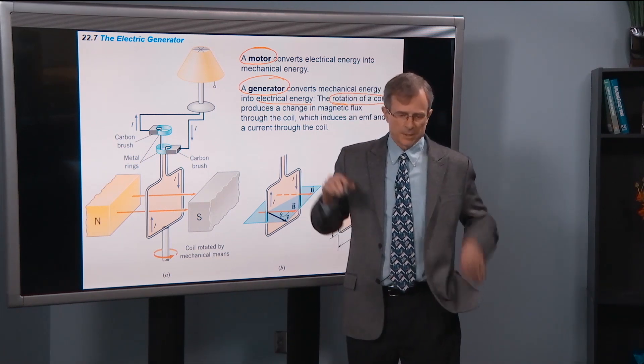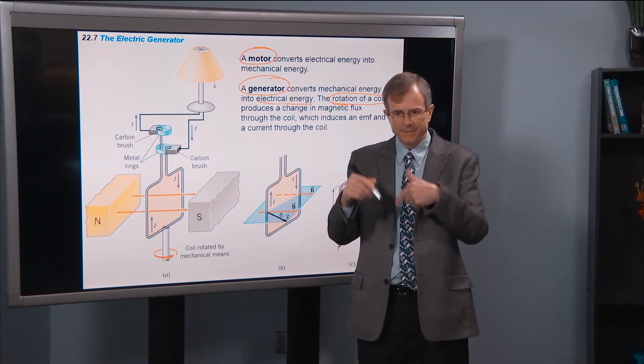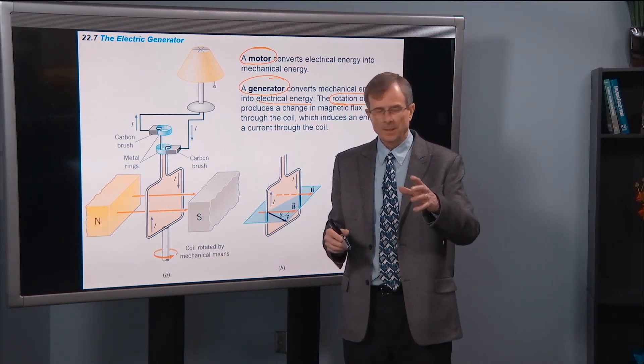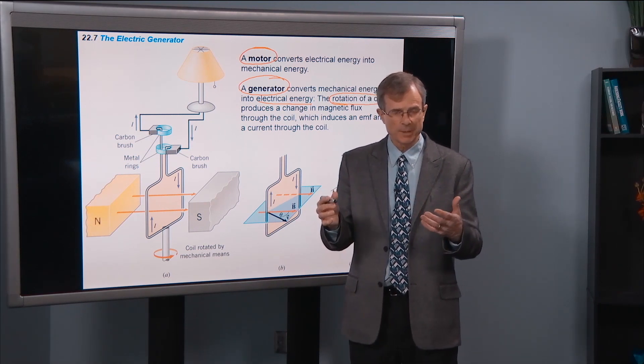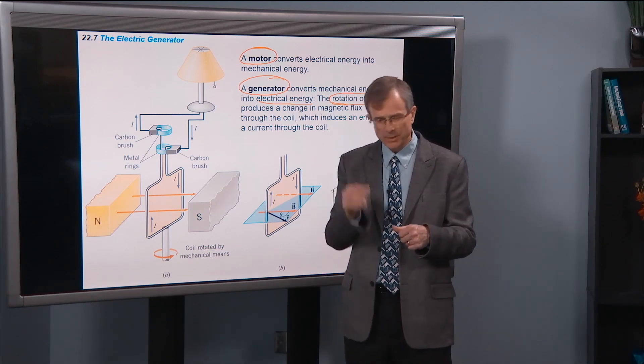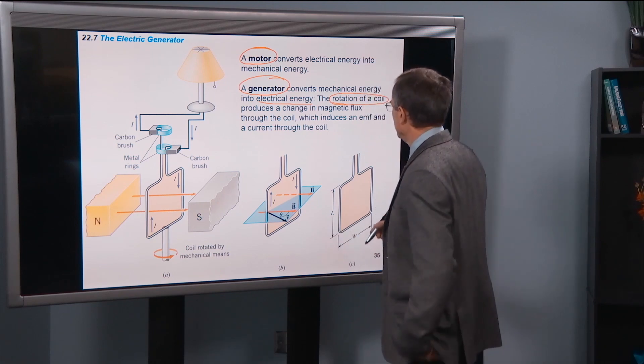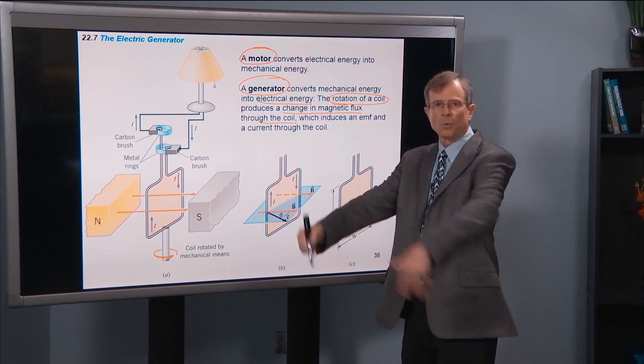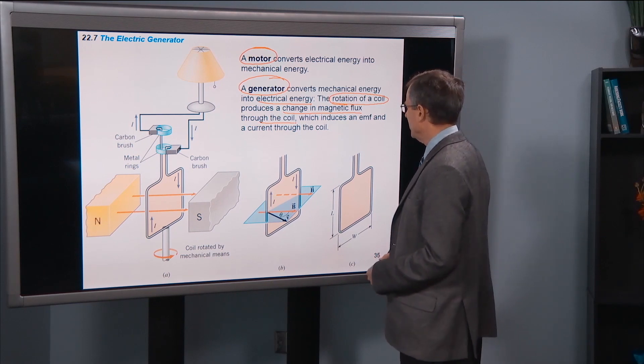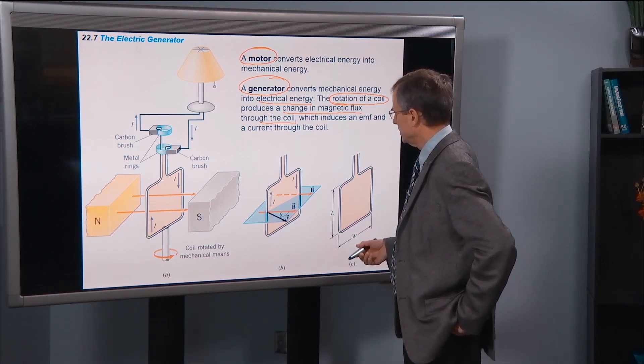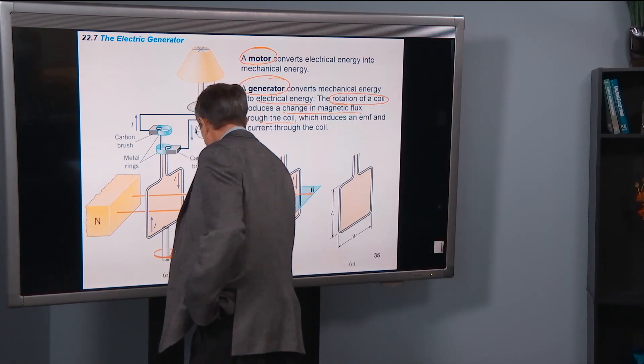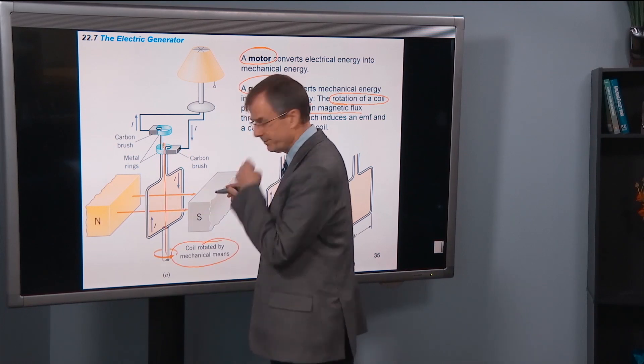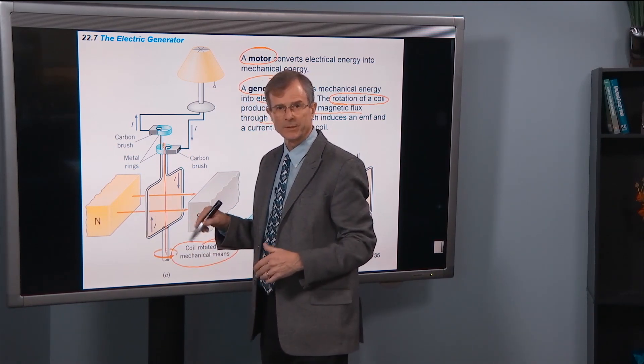So it's the rotation of a coil by some external agent. In wind turbines, for example, it's the wind that turns the fan blades, and then that motion is used to generate electricity. Or a turbine in a waterfall, you've got water passing through these fan-shaped propeller-like things that turn these turbines, and that generates electricity. So the change in flux through the coil is produced by this external rotation. Some agency is causing something to turn, and then that induces an EMF and a current through the coil.